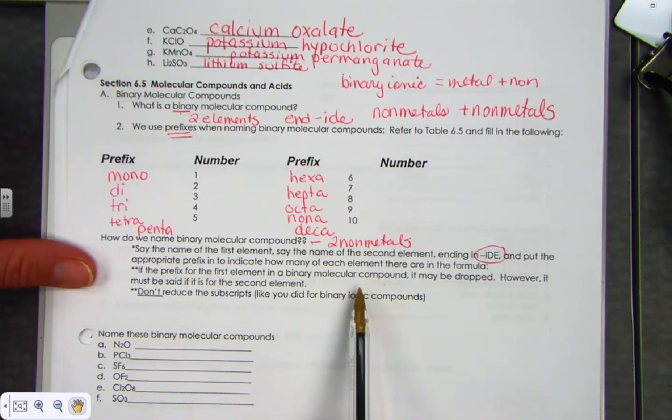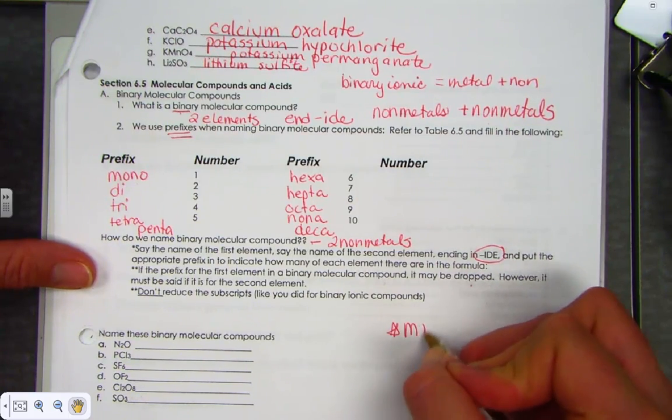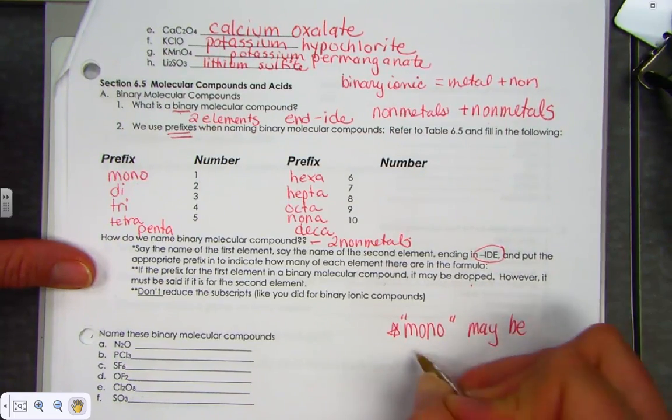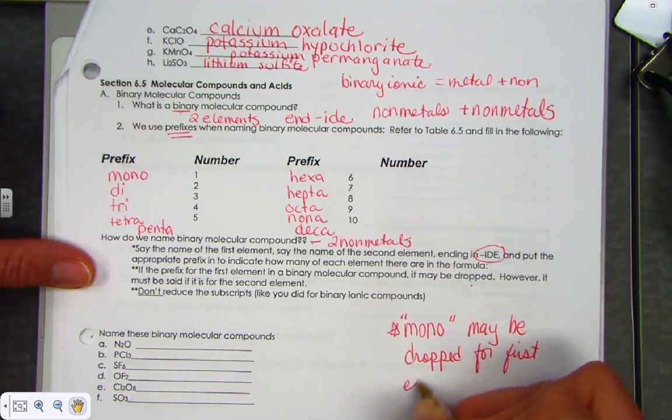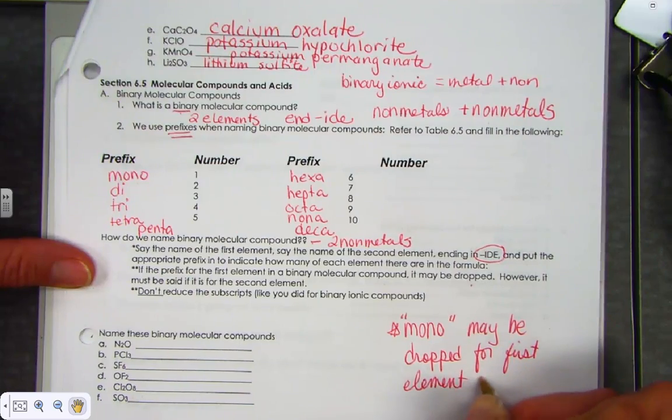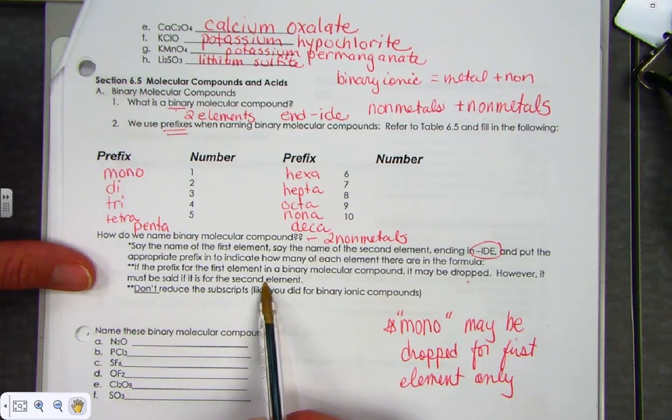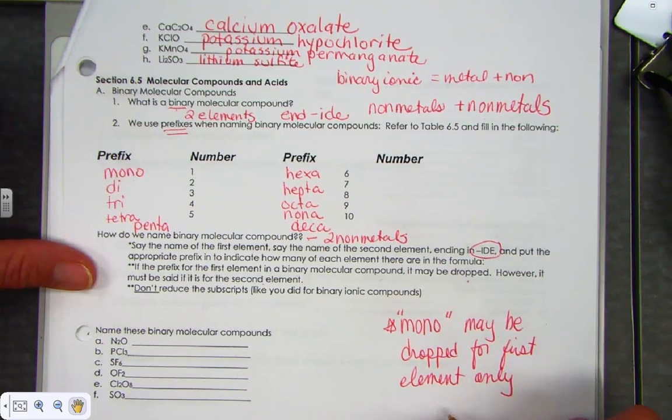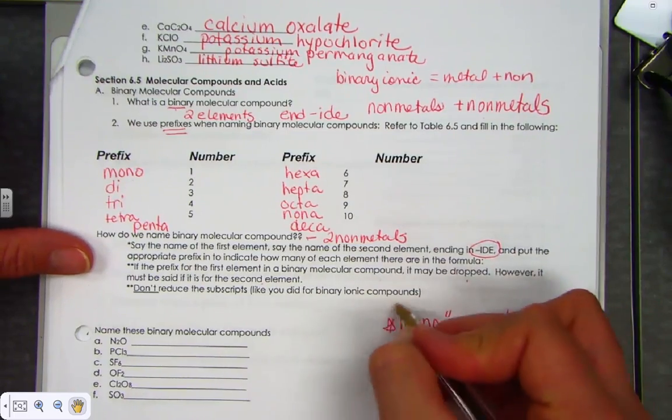If the prefix for the first element in our binary molecular compound is a one, it may be dropped. I don't have to say mono for the first element. Mono may be dropped for the first element only. But it must be said for the second element. I may drop it for the first, but it has to be there for the second element.